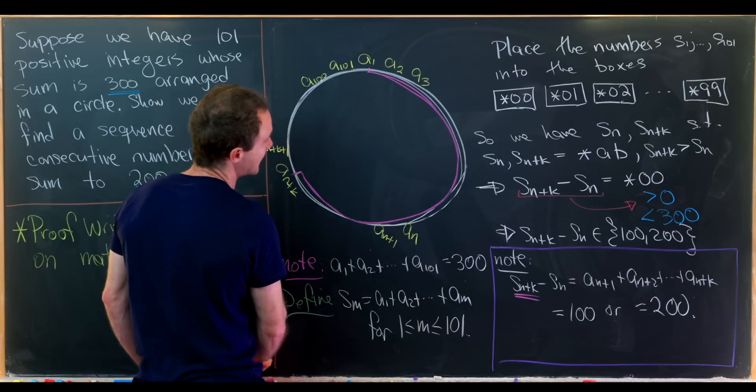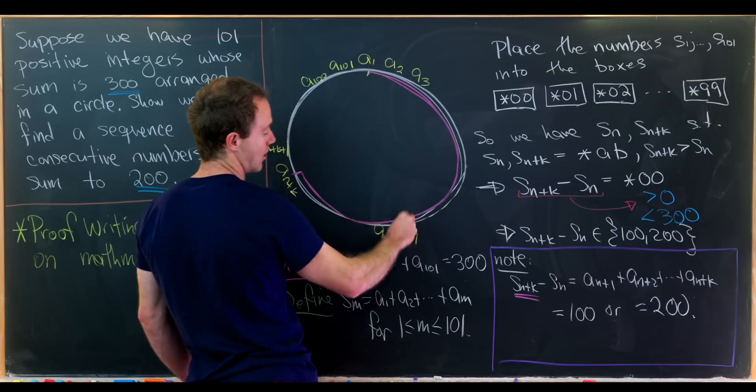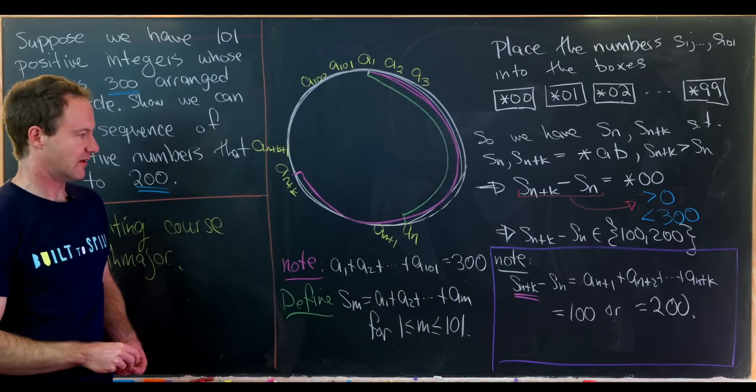Okay, good. And then sn is the arc from a1 all the way up to an. So it's like a beginning part of that arc.